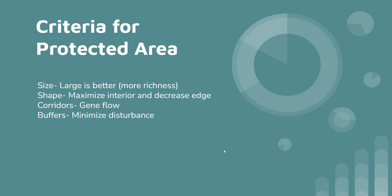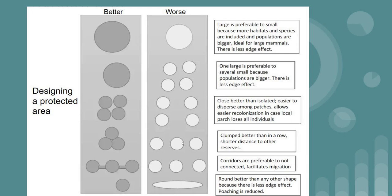What criteria would we use to design such a system? Size — bigger is better because you have more species richness. Shape — rounder is better, as it maximizes the interior and decreases the edge. We want corridors and buffers between areas. When designing an in situ preserve, a connected, compact layout is better. You don't want it broken up, you don't want large buffer areas, and you don't want disconnected sections. All connected areas make for a better system.